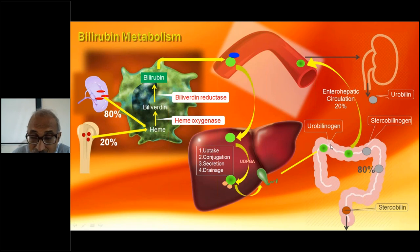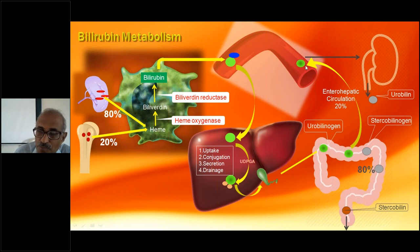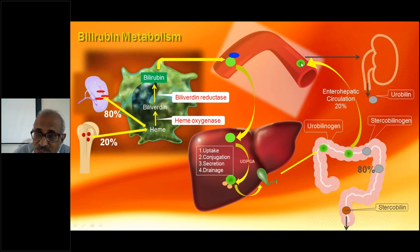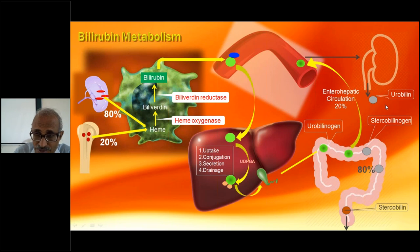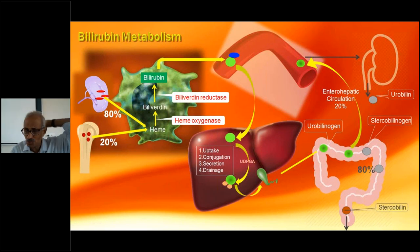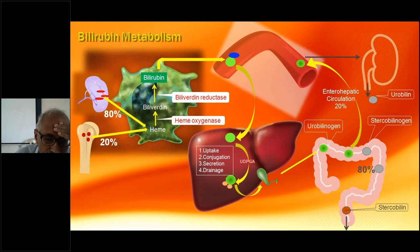In the intestines, due to bacterial action, conjugated bilirubin is converted to urobilinogen, then to stercobilin, and ultimately excreted in stool. Some urobilinogen is reabsorbed back into the blood through the enterohepatic circulation — nearly 20% of the bilirubin passed into the intestine. A fraction of urobilinogen goes into the kidney and is excreted as urobilin in the urine.